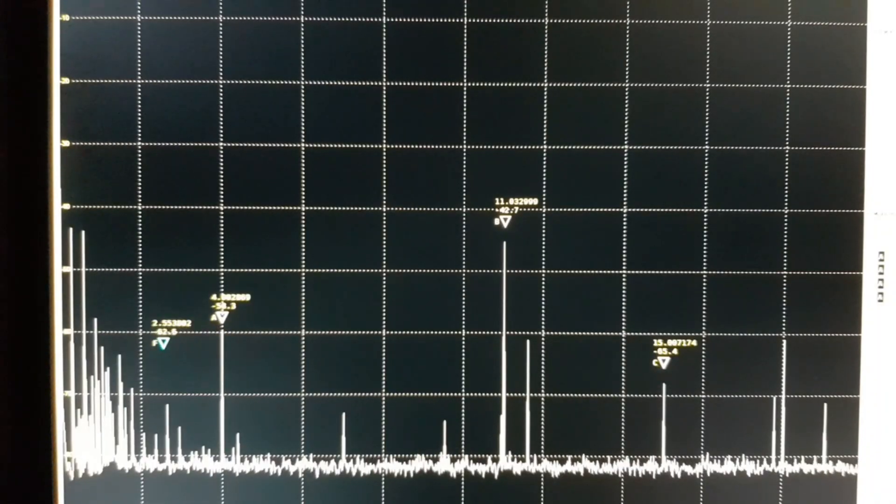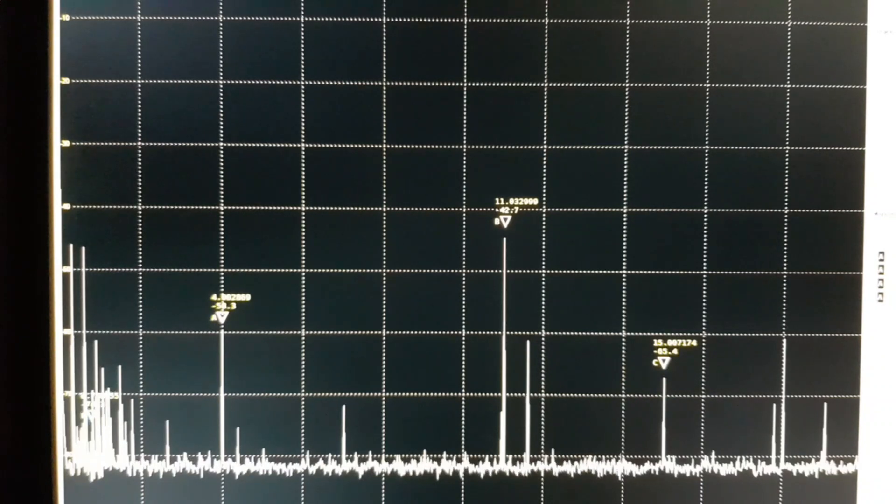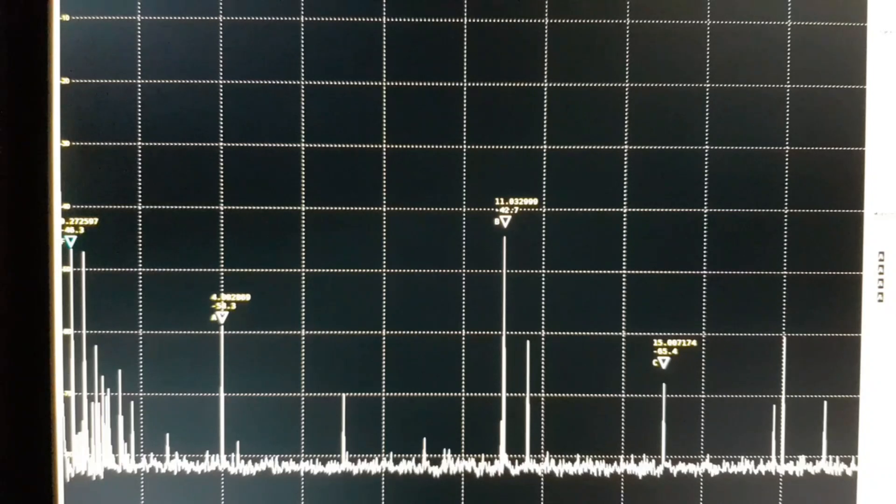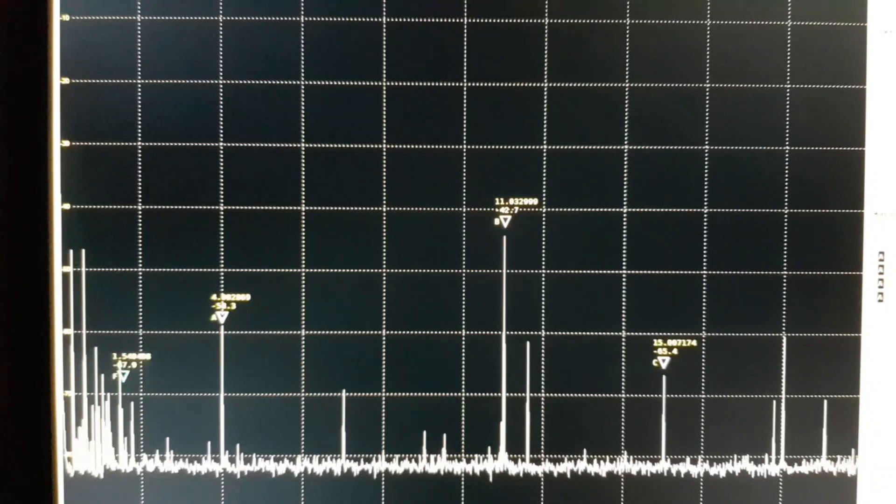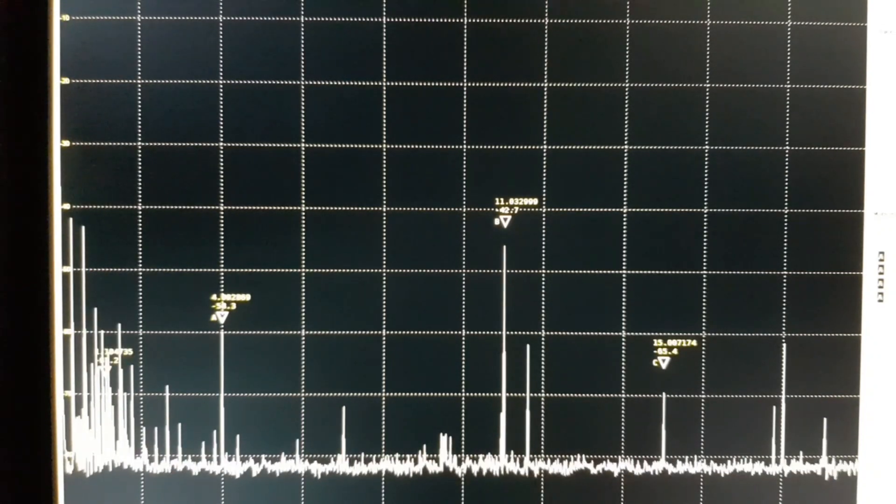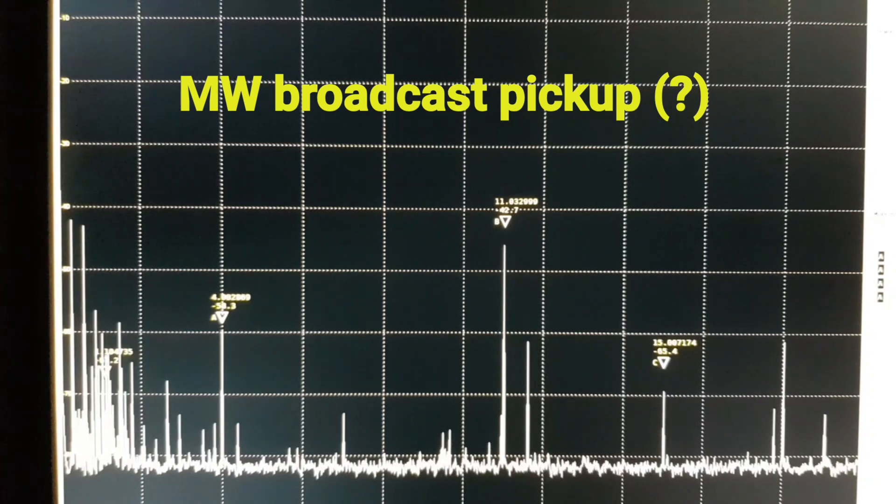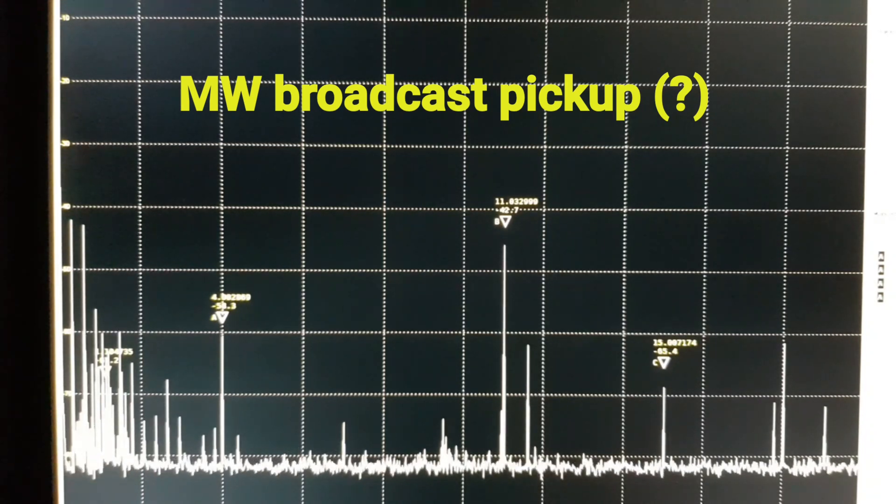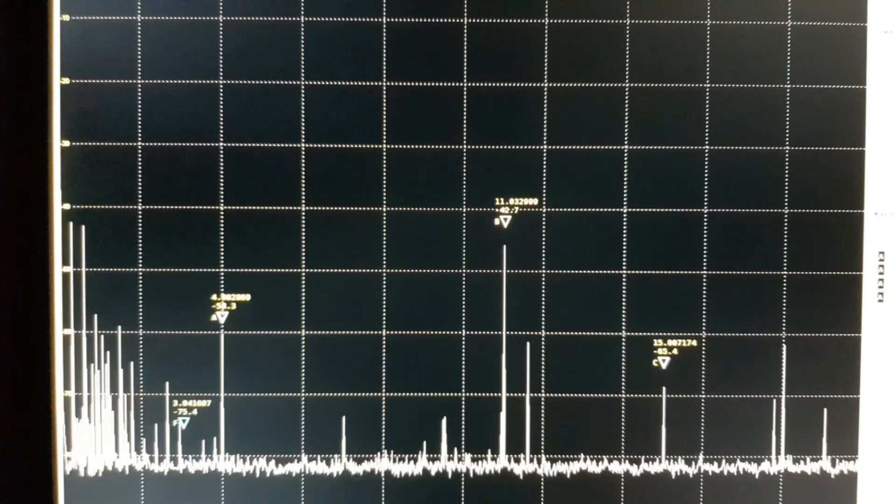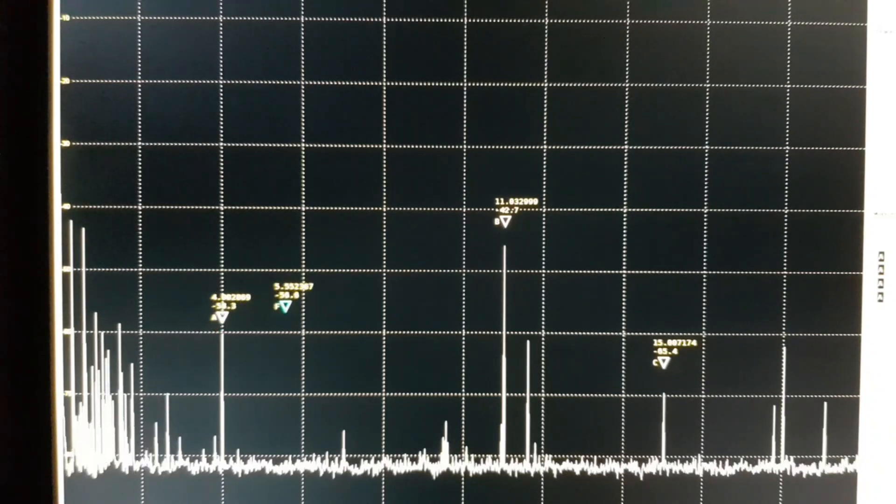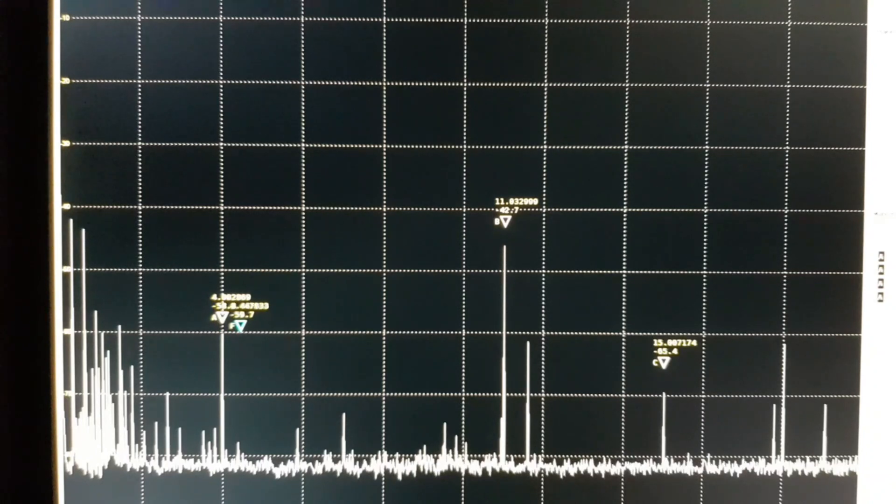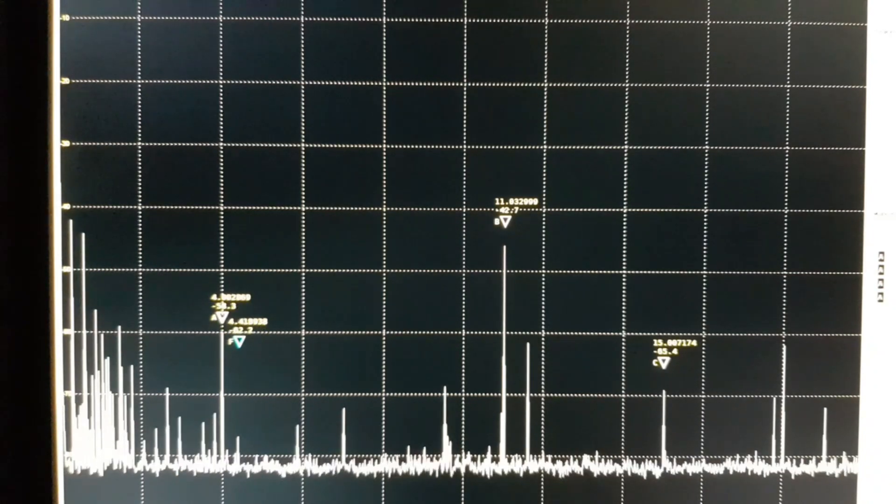So now let's try and interpret what all of these spikes are. Well, there's a big cluster down here beneath 2 MHz and these are I think broadcast band pickup. The other possibility is that it is noise coming off my switch mode power supply, but I have tried it off a linear supply and it really didn't make much difference. I think that's the likely explanation. Now this first big peak is at 4 MHz, so that is the signal generator, the 7020 kHz signal generator coming through the receiver.